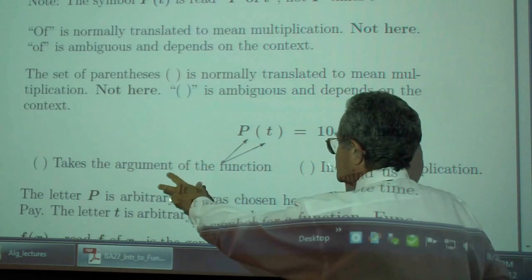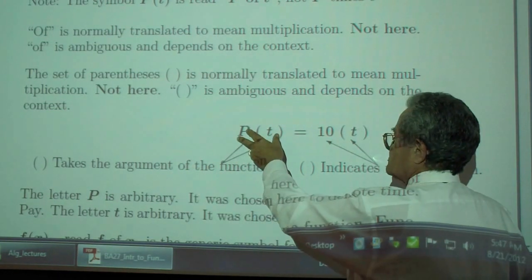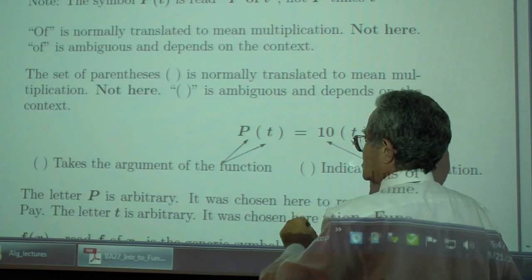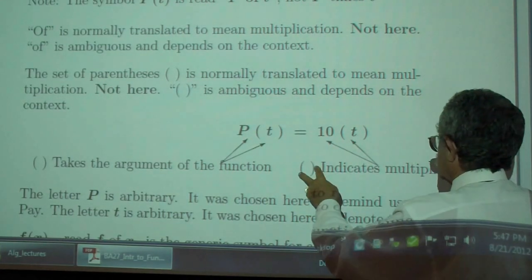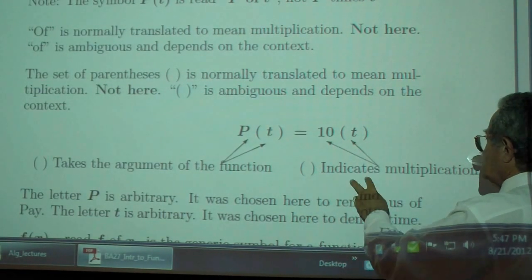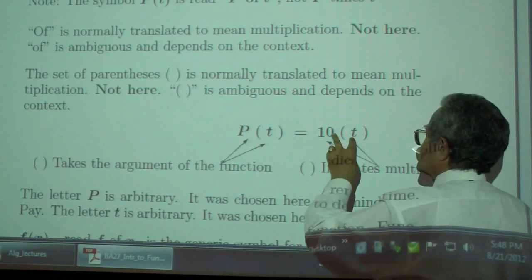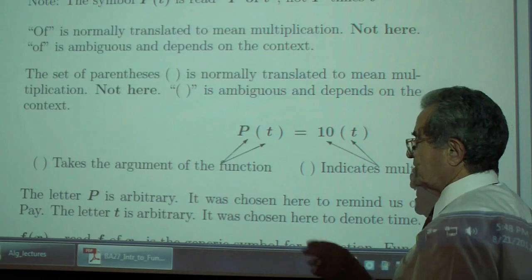So the argument of the function is P of T. The argument is T. And the parentheses here indicate... not multiplication. Yes, multiplication. See the context.